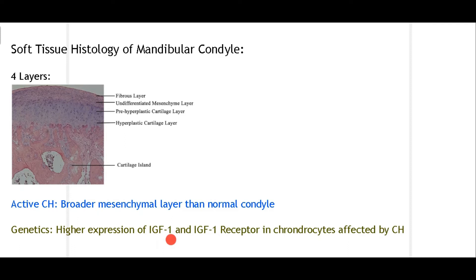Regarding genetics, the expression of insulin growth factor 1 (IGF-1) and insulin growth factor 1 receptor has been found to be increased in chondrocytes affected by condylar hyperplasia. So histology is important for diagnosis, and genetics should also be kept in mind for more advanced understanding.